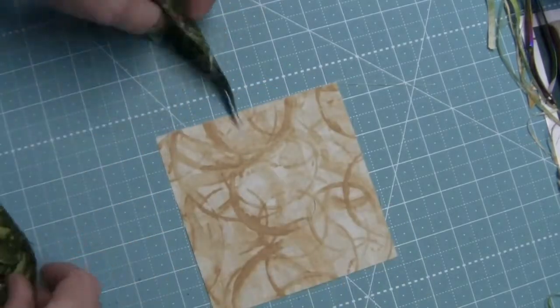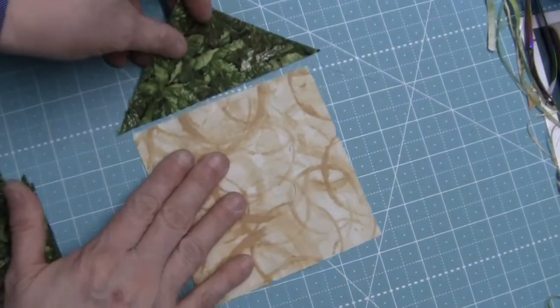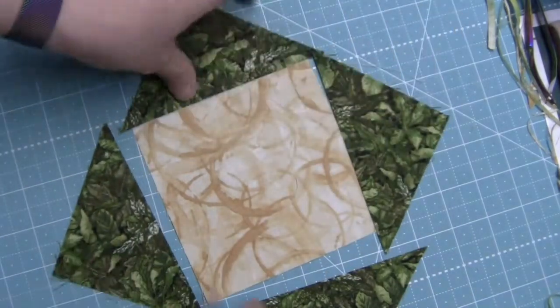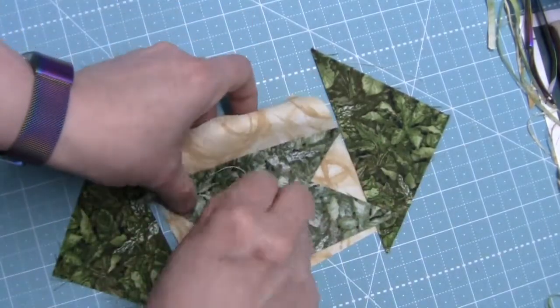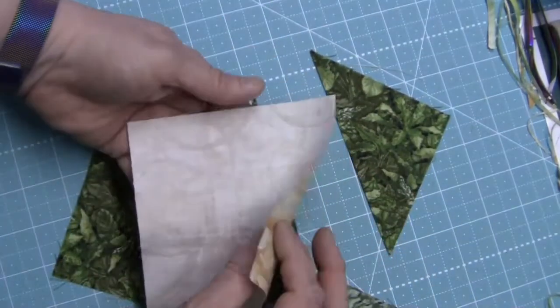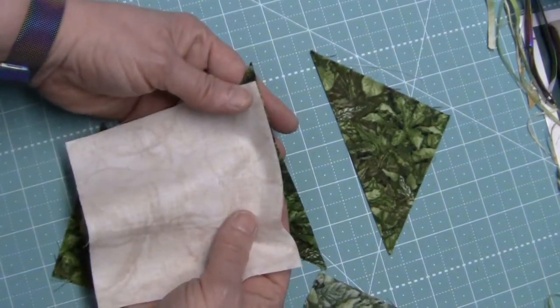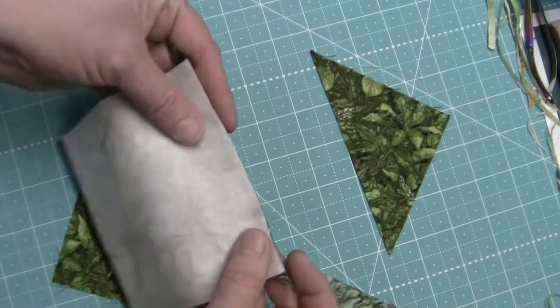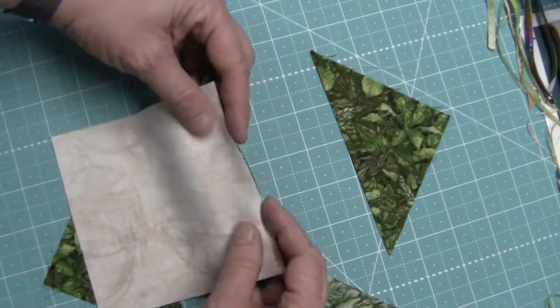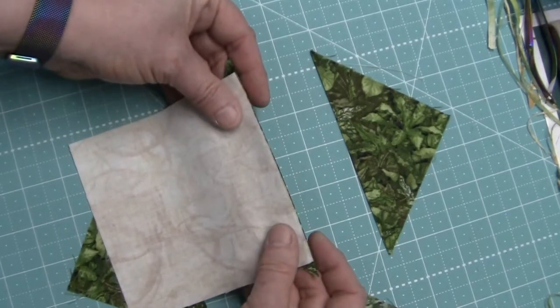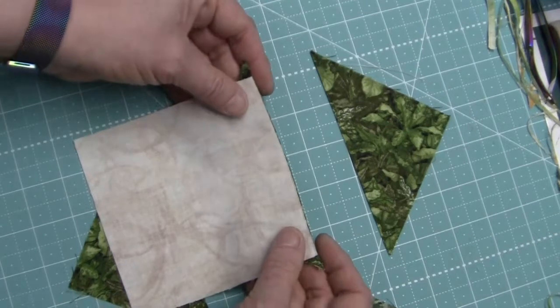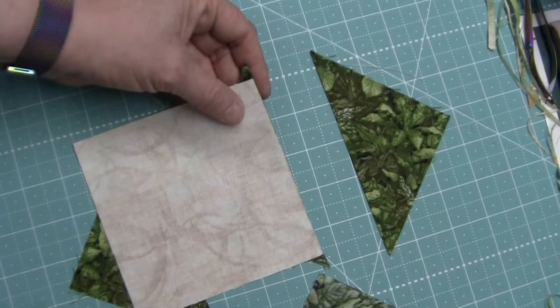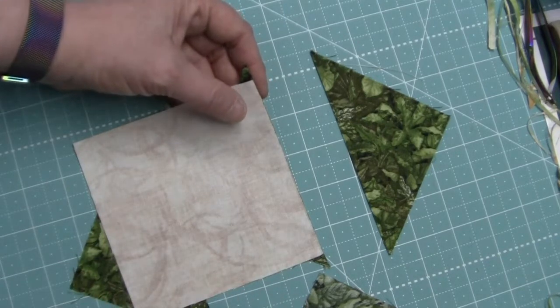Next up is to make a square in a square unit where we're going to take our fabric A square and we're going to put fabric C triangles on it. The easiest way to do this is to position the triangle on the bottom face up with the square face down, right sides together. Make sure your edges are even and you've got about the same amount of fabric peaking out on either side. Now you can sew your quarter inch seam, sew on the opposite triangle, and then we're going to press the triangles away.